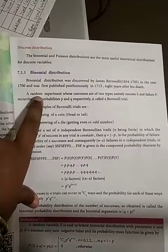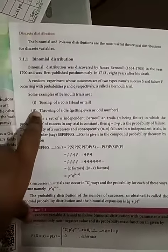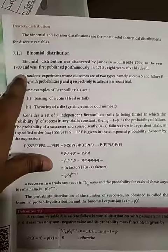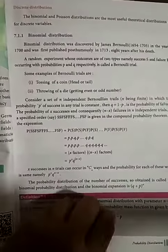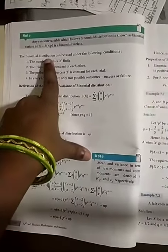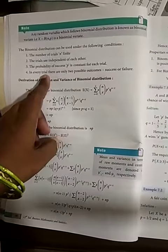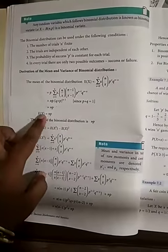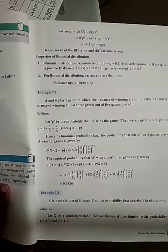The conditions for the binomial distribution are on page 46 — all four conditions. Then the derivation for the mean and variance, and the properties — all this part has to be written in your classwork notebook as Exercise 7.1.